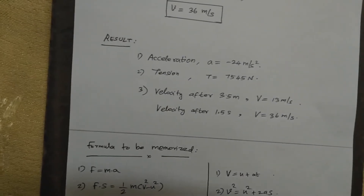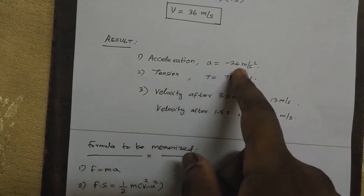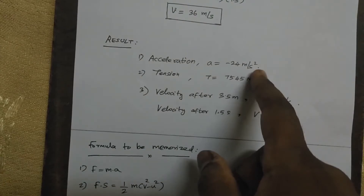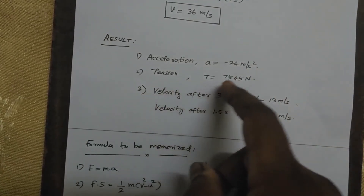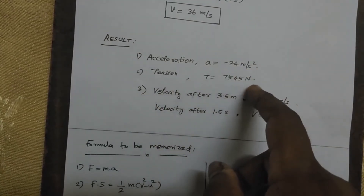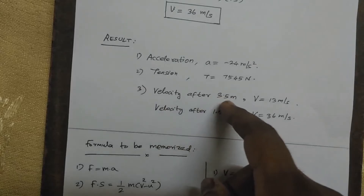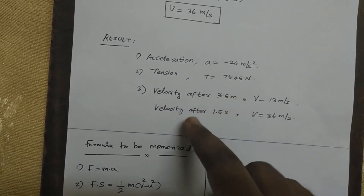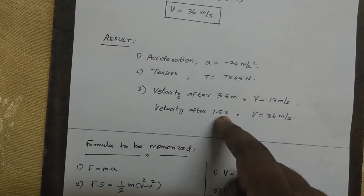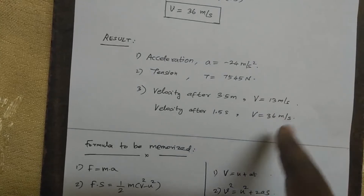Getting the final results: acceleration A equals minus 24 meters per second squared; tension T equals 7545 Newtons; velocity after 3.5 meters, V equals 13 meters per second; velocity after 1.5 seconds, V equals 36 meters per second.